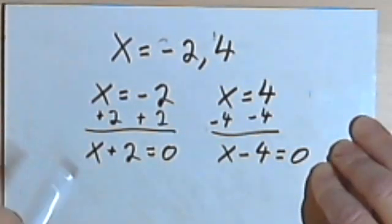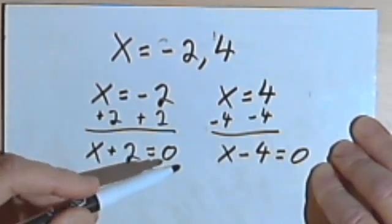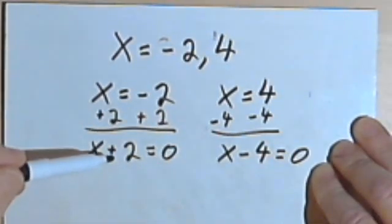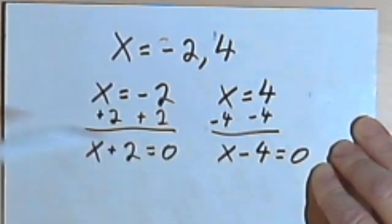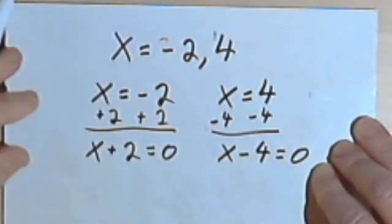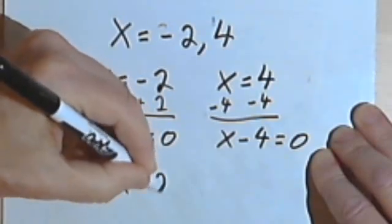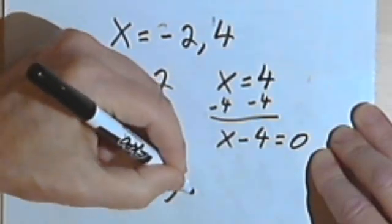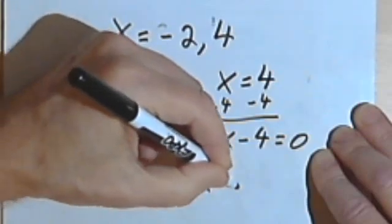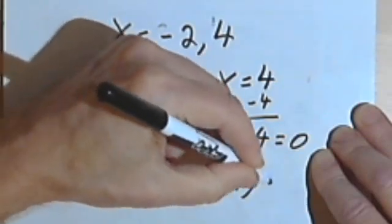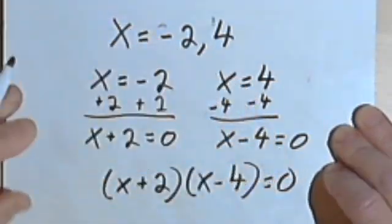Okay, so now, if x plus 2 equals 0 and x minus 4 equals 0, then when I multiply the two of them together, it would also have to equal 0. So I'm just going to say x plus 2 times x minus 4 equals 0.